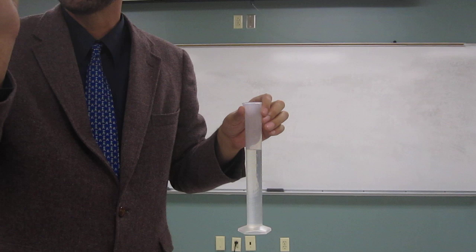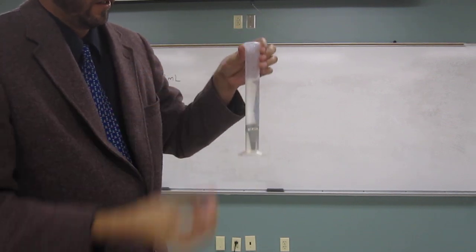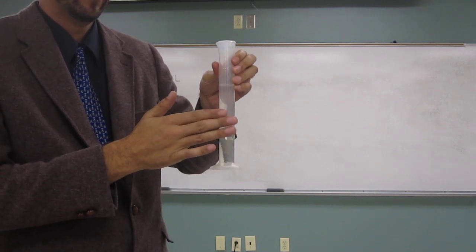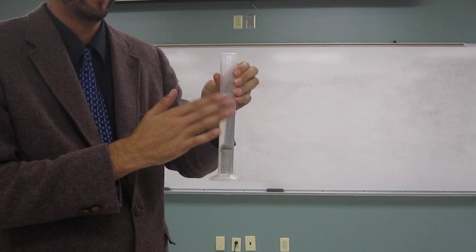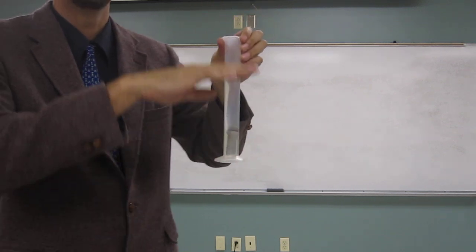Okay, and then what I do to figure out the volume is I'm going to drop this into the graduated cylinder. Okay, so notice, let's get all the air bubbles out of there. So what do you think happened to the total volume? What did it do?